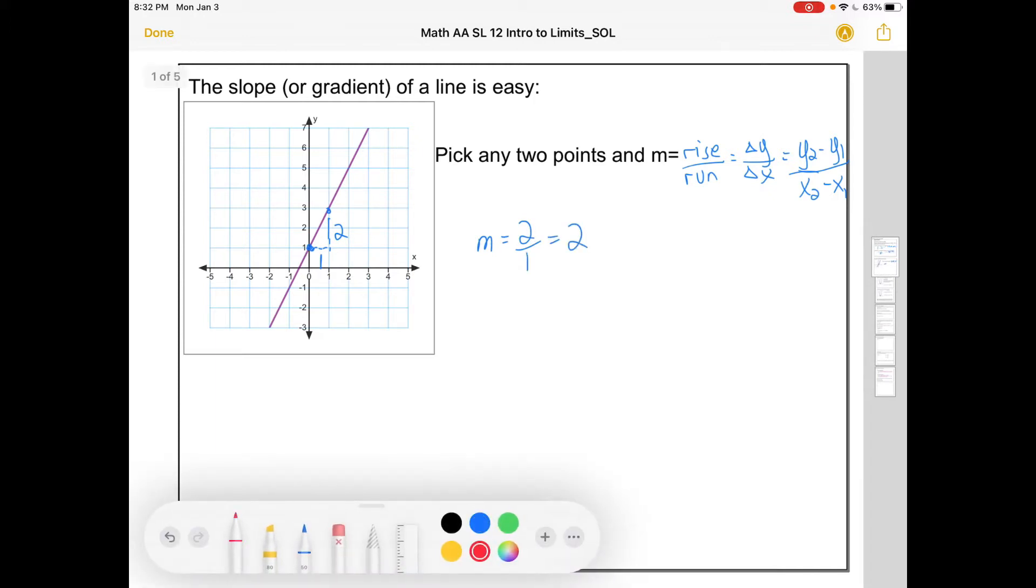But I could pick different points. I could pick this point and this one over here. If that were the case, I'd have a run of two and a rise of four. So slope would be four over two. The slope is the same. If I picked different points, so I picked this one and say this one up here, I'd have a run of three and a rise of six. So m would be six over three, it's still two. No matter what two points we choose on a line, the slope is always the same.